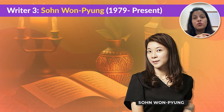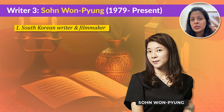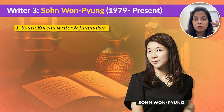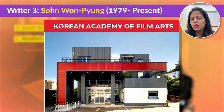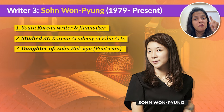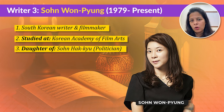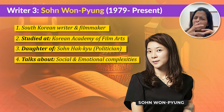Writer number three is Song Pyang-on, and from the name itself you can tell she is not British or American — she is from South Korea. She is not just a writer but also a filmmaker, having studied at the Korean Academy of Film Arts, and she beautifully blends cinematic storytelling with deep emotional narratives. She is the daughter of well-known politician Song Hak-gyu, but despite her political background she carved out her own space especially in young adult fiction.